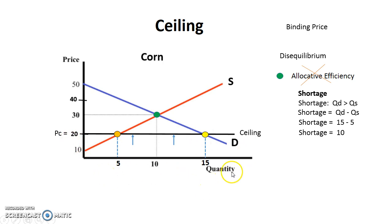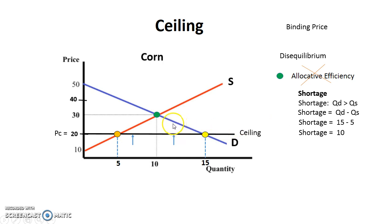One other thing referred to about a ceiling: in addition to a shortage being created, sometimes producers know that there are consumers willing and able to buy at a higher price, so a black market will exist for the selling of those products in order to get a higher price.